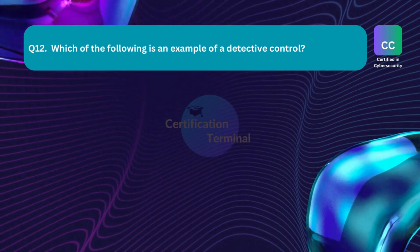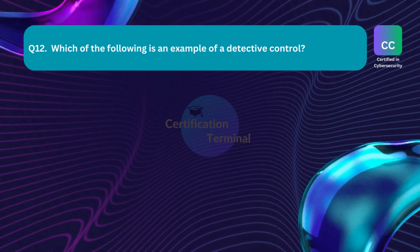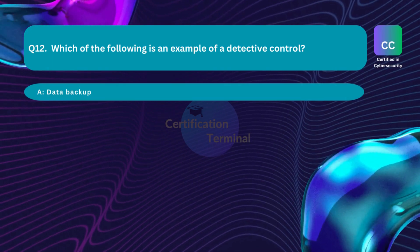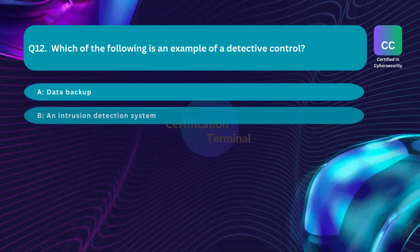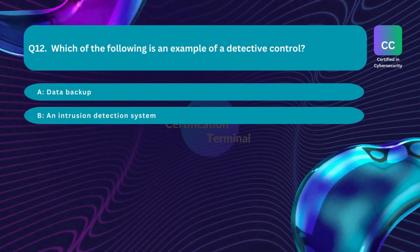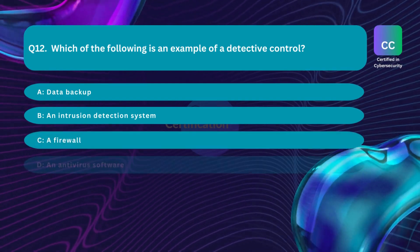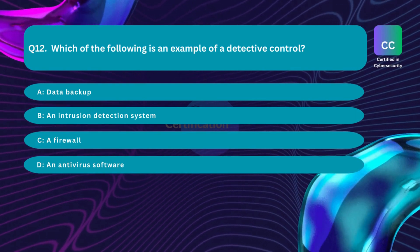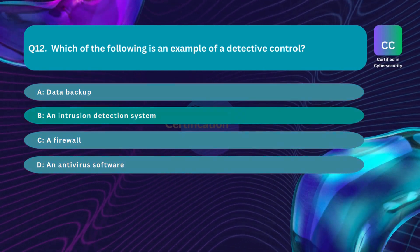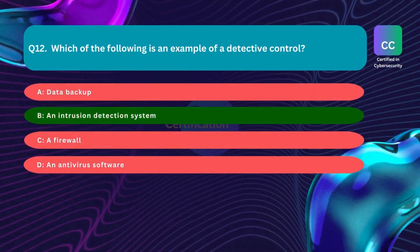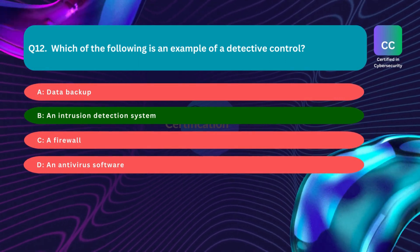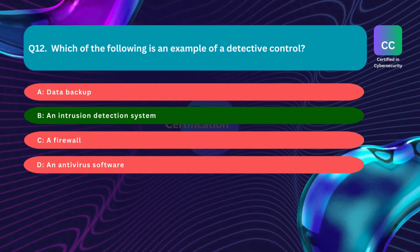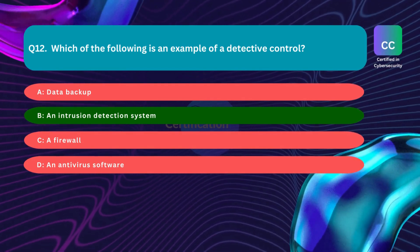Question number twelve: Which of the following is an example of a detective control? Option A: data backup. Option B: an intrusion detection system. Option C: a firewall. Option D: antivirus software. The correct answer is Option B — an intrusion detection system. An intrusion detection system is an example of a detective control as it is designed to detect and alert on unauthorized access attempts.